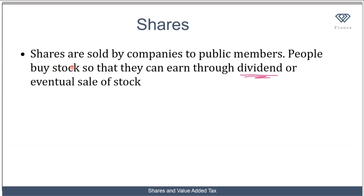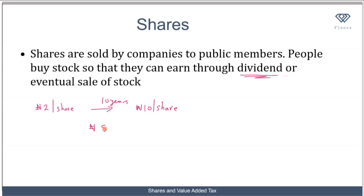Another way you can generate profit from your shares: let's assume you bought shares at two naira per share, and after a period of 10 years the share price has increased to 10 naira per share. If you decide to sell after 10 years, for each share that you sell you get a profit of eight naira. So by buying shares you are hoping the company will do well, earn dividends, and also appreciate in share value so you can eventually sell and generate profit.